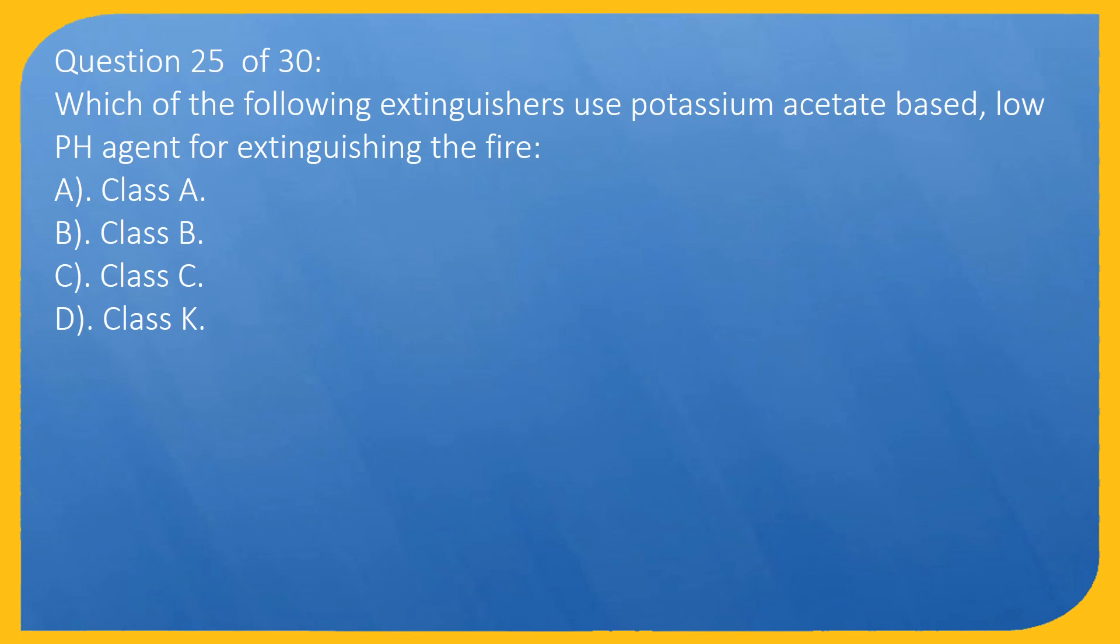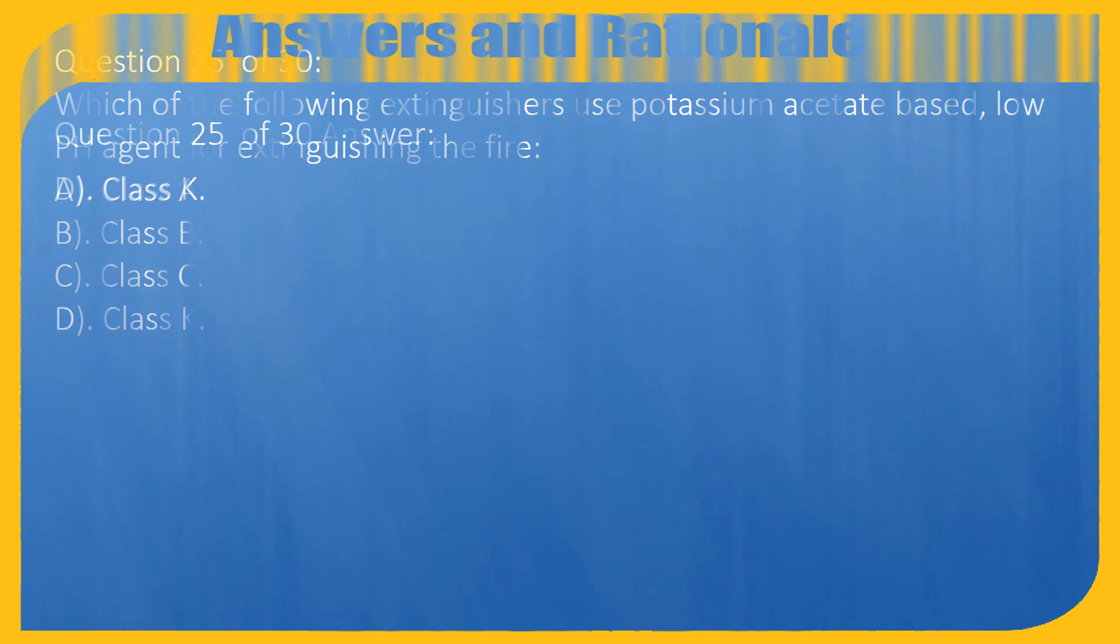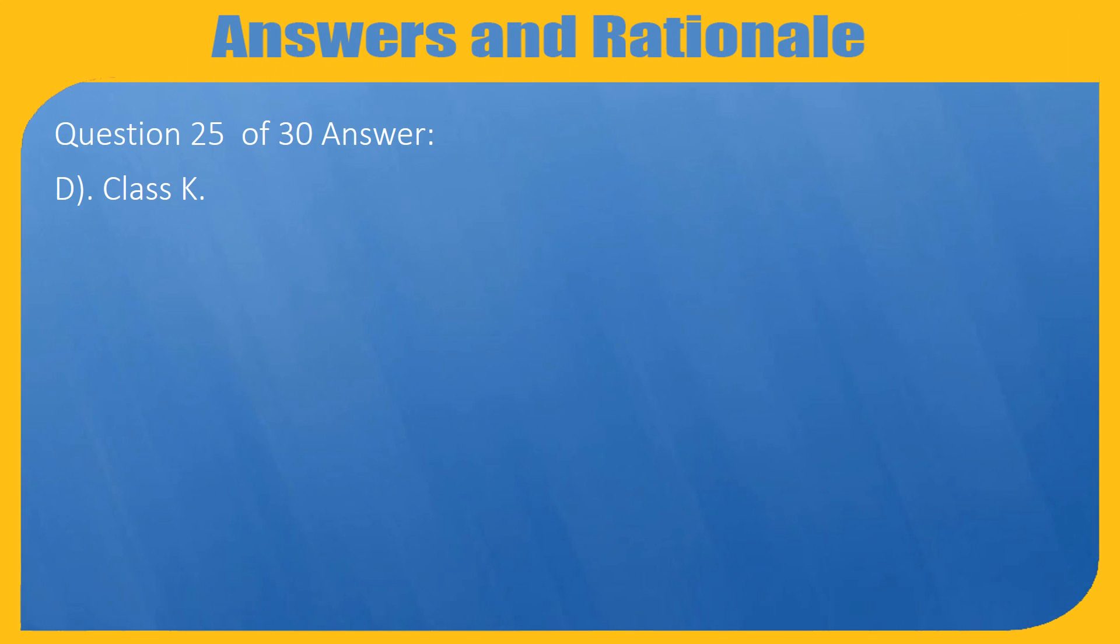Question 25 of 30: Which of the following extinguishers use potassium acetate based low pH agent for extinguishing the fire? A. Class A, B. Class B, C. Class C, D. Class K. Answer: D. Class K.